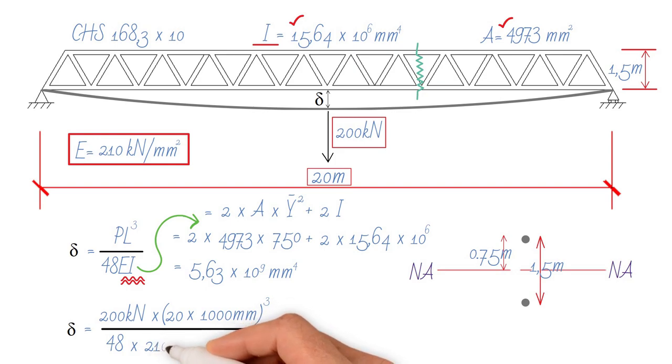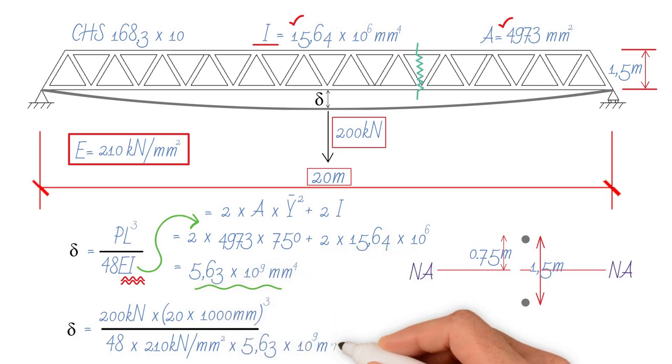divided by Young's modulus of steel, 210 kilonewtons per millimeter squared, divided by I which we worked out, 5.63 times 10 to the 9 millimeters to the 4. As a result, the deflection would be 28.21 millimeters.